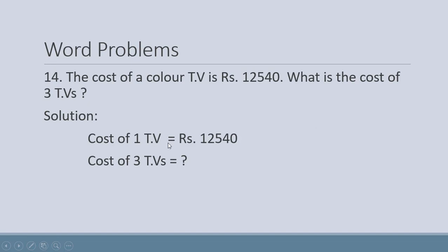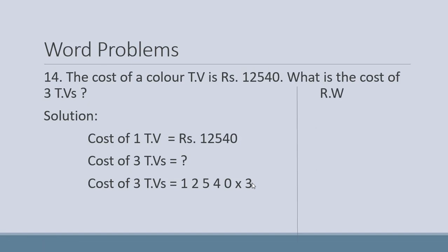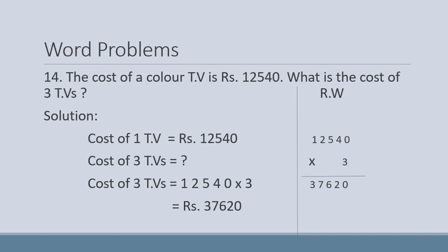Cost of three TVs equals question mark — we don't know, so we put a question mark. Teen TV ki price ka pata nahi, wo humne find karna hai. Cost of three TVs equals twelve thousand five hundred and forty multiply three. Draw a rough column and multiply — we get thirty-seven thousand six hundred and twenty. So the answer is rupees thirty-seven thousand six hundred and twenty. Done with today — see you in the next video!